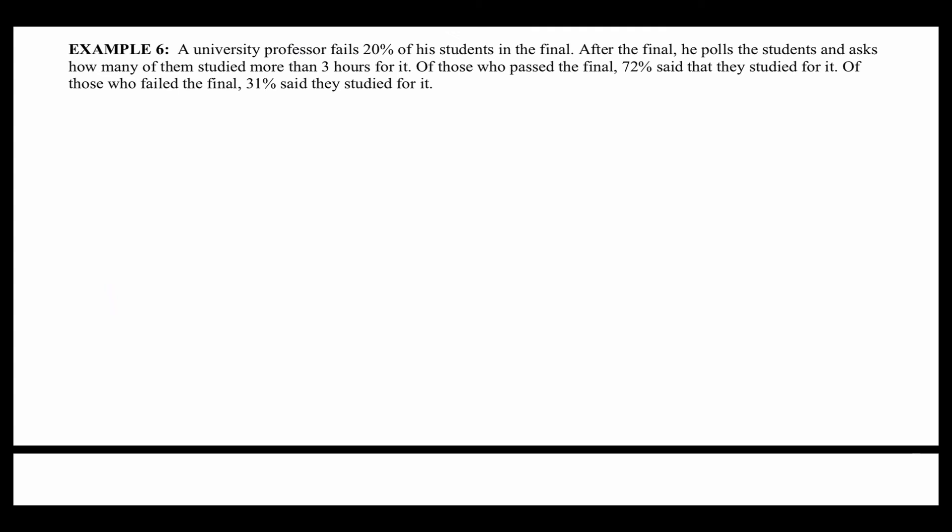New problem: a university professor fails 20% of his students on the final. After the final, he polls students asking how many studied for more than three hours. Of those who passed, 72% say they studied. Of those who failed, 31% say they studied. There are two events: first, whether you passed or failed; second, whether you studied or not. Draw a tree diagram for this.